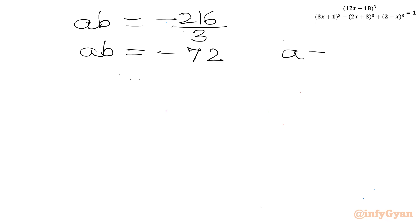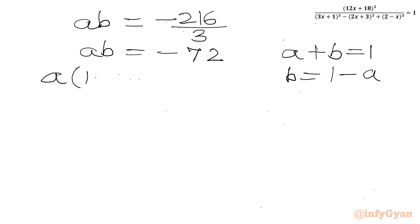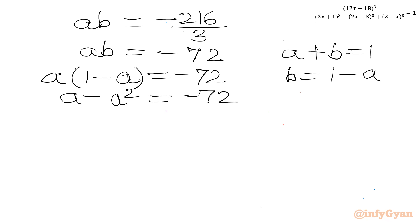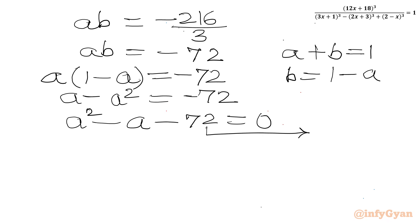Now we had the equation A plus B equal to 1 and AB equal to minus 72. I can use the method of factorization. The factors of 72 — we can write 9 times 8 — and taking their difference we will attain minus 1. So I will split minus A as minus 9A plus 8A, giving A² minus 9A + 8A minus 72 equal to zero.